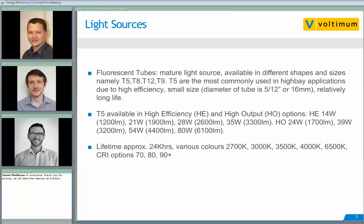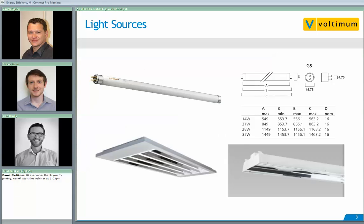T5 fluorescent tubes are available in a multitude of color temperatures, from 2,700 Kelvin up to 6,500 Kelvin, and different CRI options from 70 through to 90 plus — with 90 plus representing color very well. The two pictures show typical high bays, each having about 4 or 6 T5 tubes to provide the desired light output.